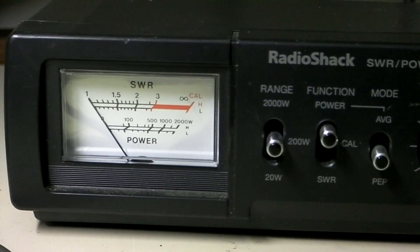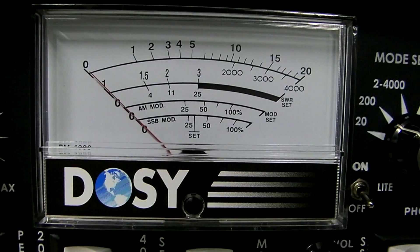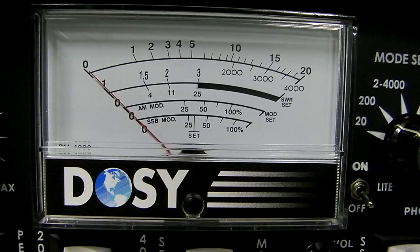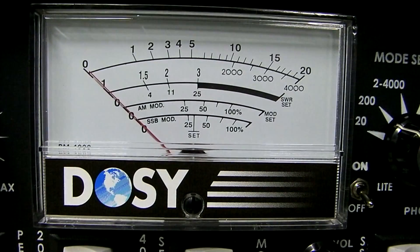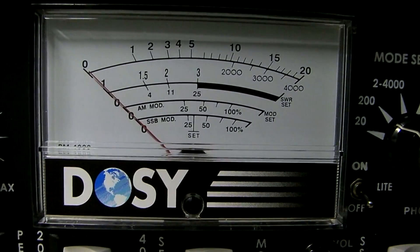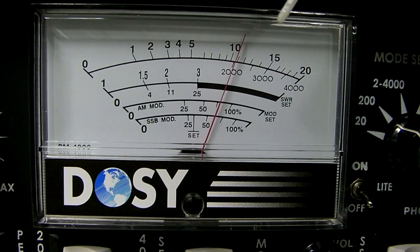I'll show you one more meter, and we'll do the same thing. So, this is a dozy, and we've got it set to the peak reading option. We're on the 200 watt scale. Once again, it's not going to have a hold on it, so I'll have to show you.